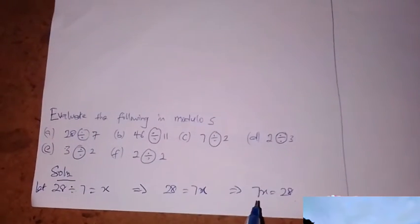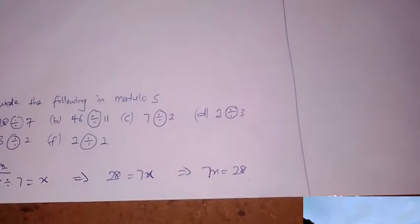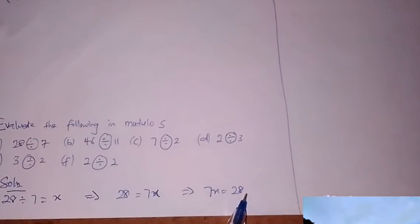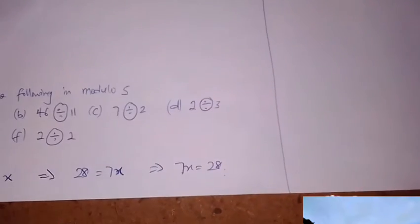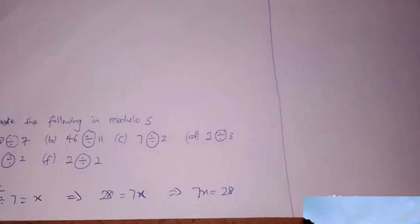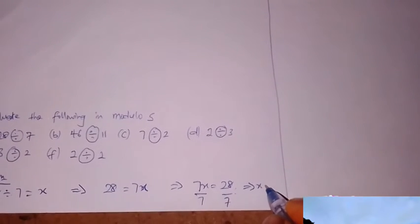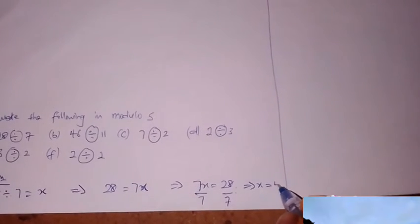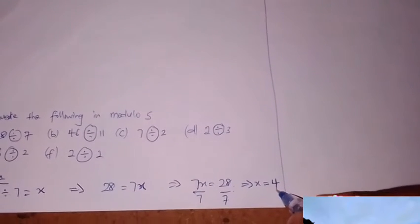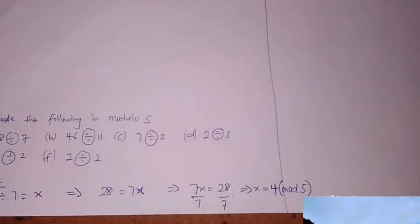Evaluating in modulo 5: 7x equals 28. The third method — divide both sides by 7 — gives x equals 4. Now, 4 in modulo 5: since 4 is less than 5, x equals 4. So 28 divided by 7 in modulo 5 is 4.